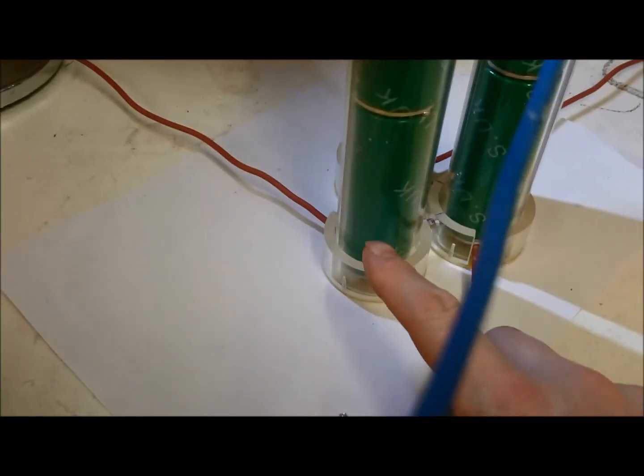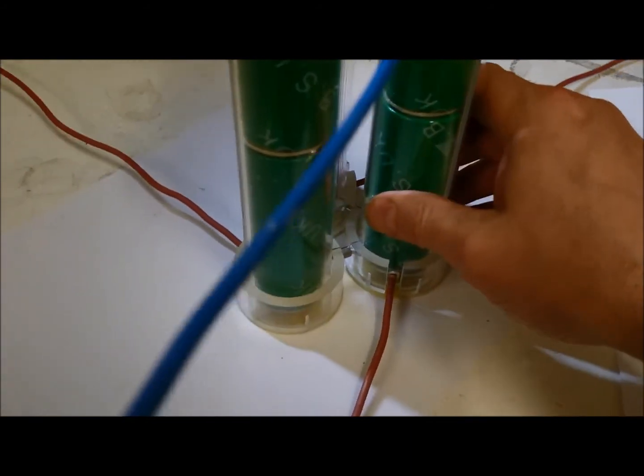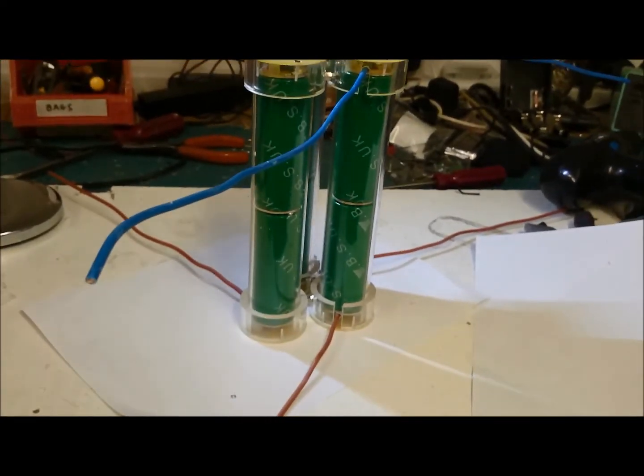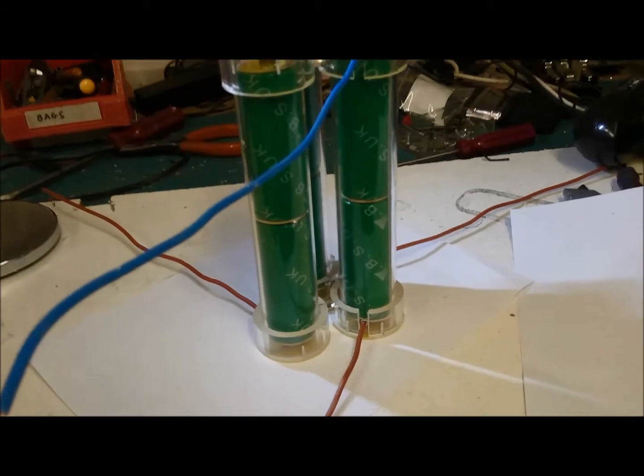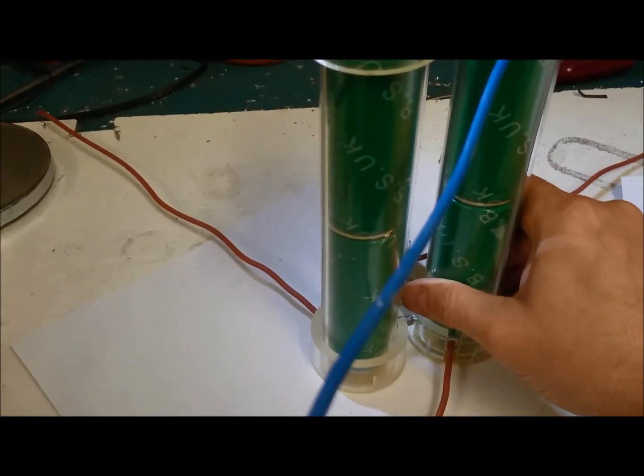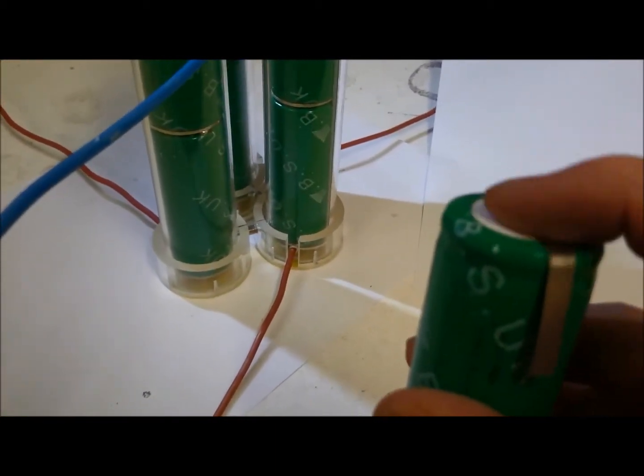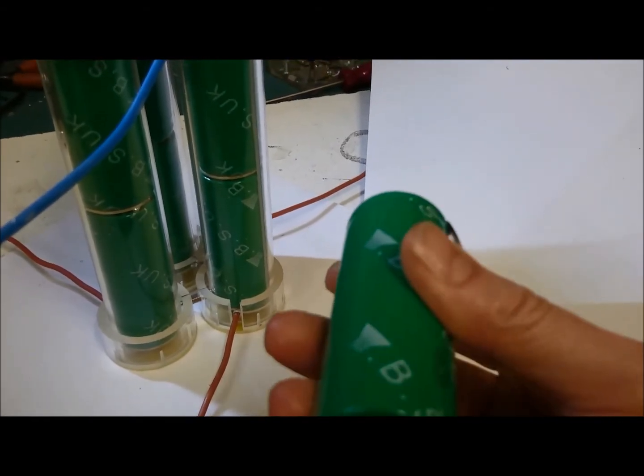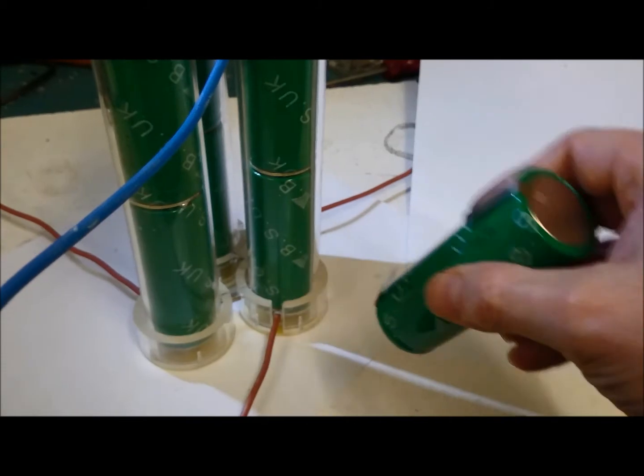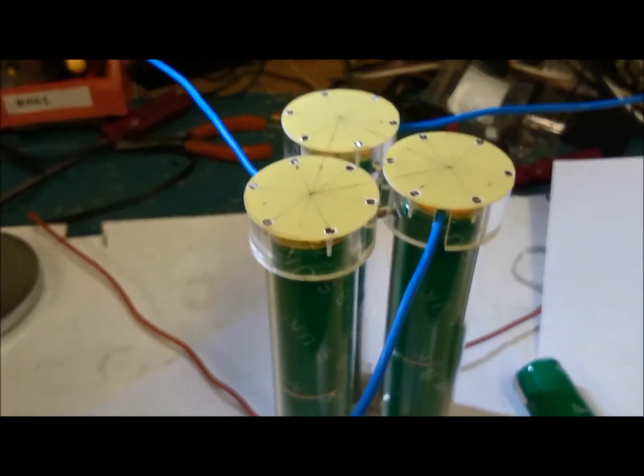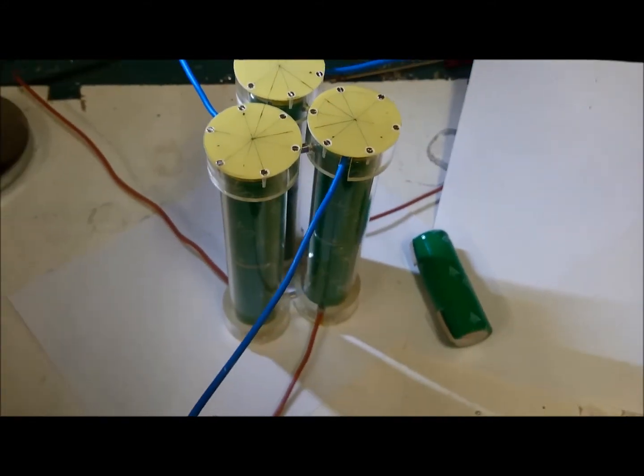And another thing I was going to mention is this positive end is always facing down. And the reason is because if these batteries go wrong for some reason and heaven forbid they explode in some way, it's the top of the battery that tends to fire off. This cap here is the bit that will fire off if these explode. And I just basically want them to go in the same direction. So it gives me an element of predictability. If anything's likely to go wrong I can kind of envisage what might happen. So that was the reason for that.